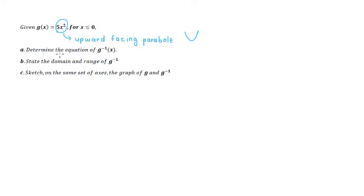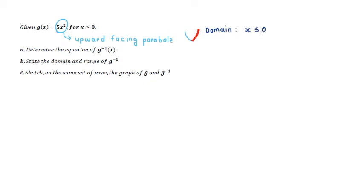5x² is an upward facing parabola, but they've restricted this parabola to only the negative x values, which means we're only looking at the left-hand arm of the parabola. So for this parabola, its domain is exactly what they gave us: x ≤ 0. And its range we can see is going to be y ≥ 0. With inverse functions, the domain and range of the two functions swap around, so this range is going to become the domain for our g inverse function.